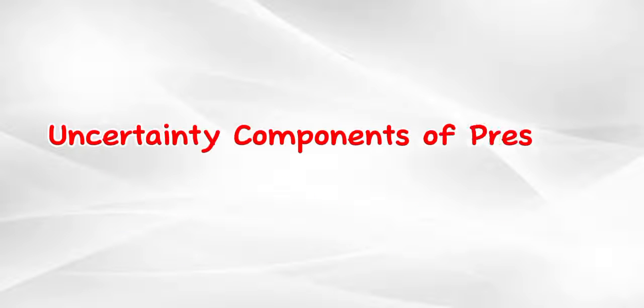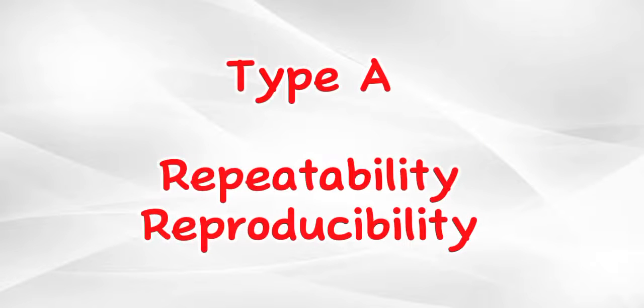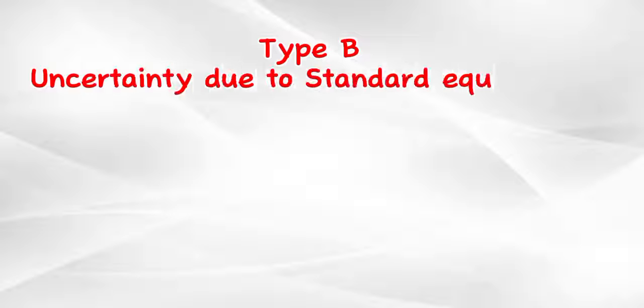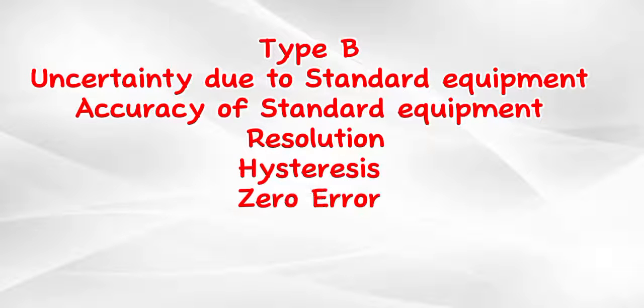Uncertainty components of pressure calibration to be considered, but not limited to: Type A - Repeatability; Type B - Uncertainty due to Standard Equipment, Accuracy of Standard Equipment, Resolution, Hysteresis error.